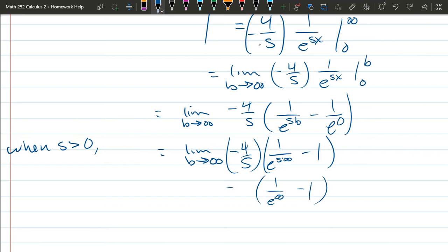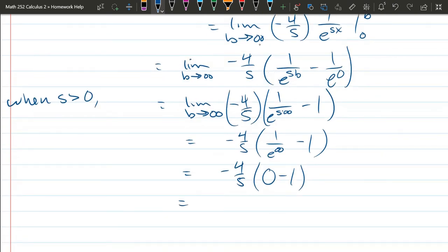It's 1 over e to the infinity. And that is 1 over infinity, or 0, minus 1. And now I have negative 1 times negative, which is positive 4 over s. And that will be my L, my Laplace, of 4 is 4 over s.